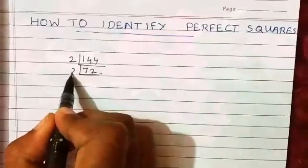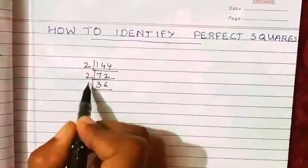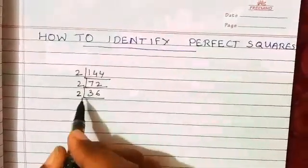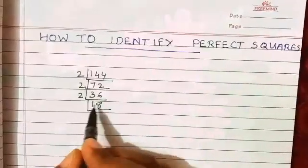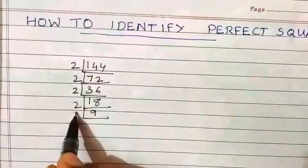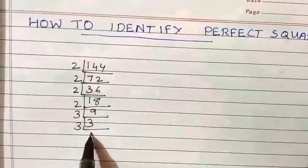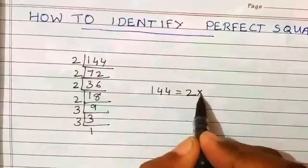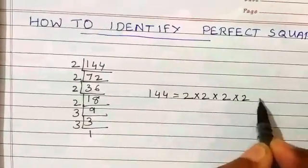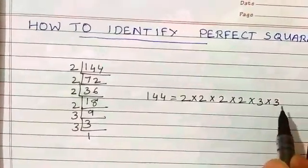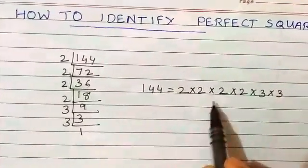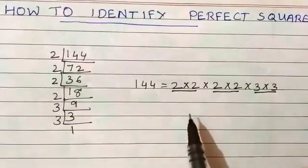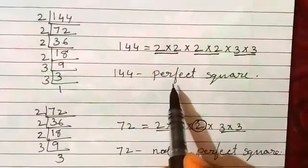If you do the prime factorization of 144: 144 ÷ 2 = 72, 72 ÷ 2 = 36, 36 ÷ 2 = 18, 18 ÷ 2 = 9, 9 ÷ 3 = 3, and 3 ÷ 3 = 1. So 144 = 2 × 2 × 2 × 2 × 3 × 3. Now consider these prime factors — each of the prime factors exists in pairs. Therefore 144 is a perfect square.